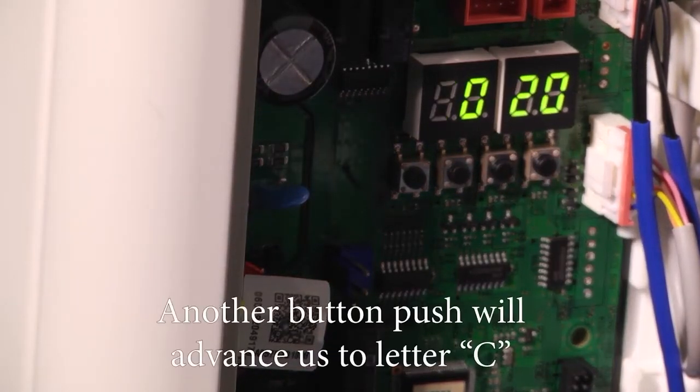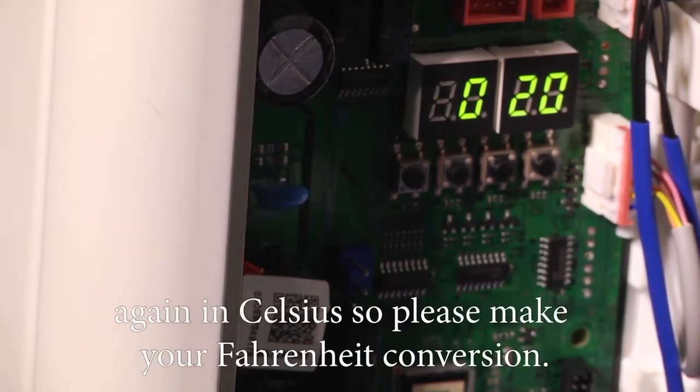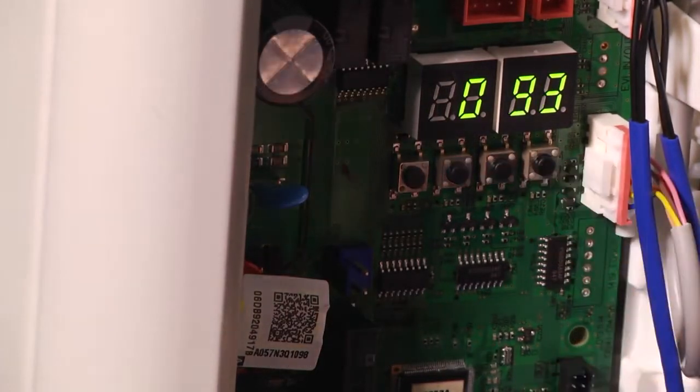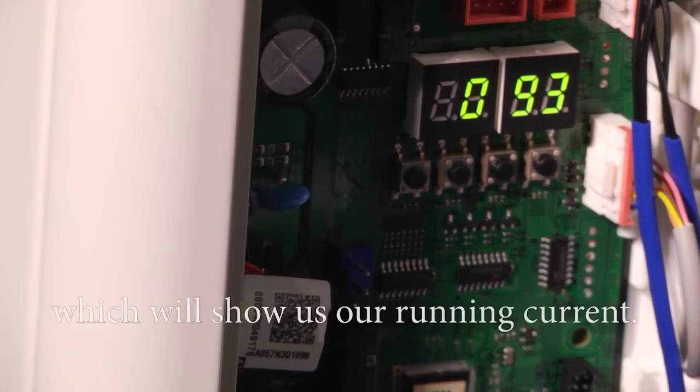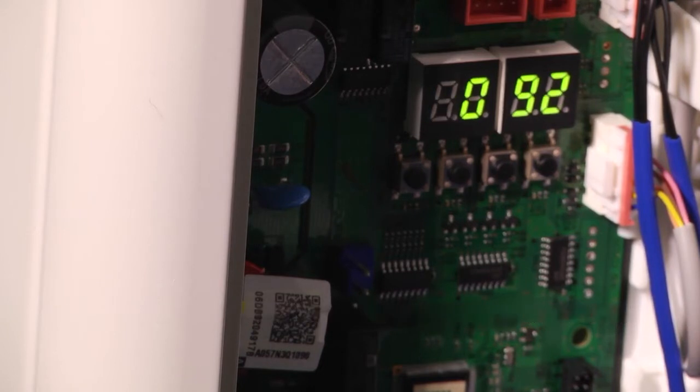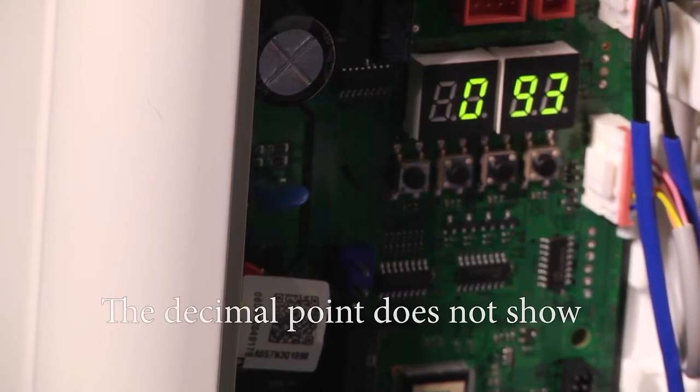Another button push will advance us to letter C, which will be our outdoor temperature, again in Celsius, so please make your Fahrenheit conversion. Pushing it again will take us to letter D, which will show us our running current. In this case, we are looking at about 9.2, 9.3 amps. The decimal point doesn't show, but know that it's a whole number and then a decimal point.